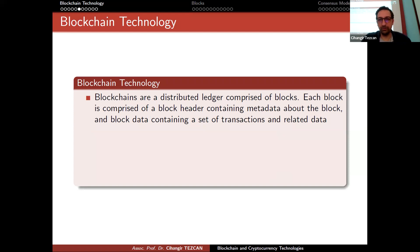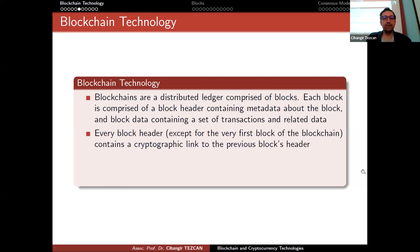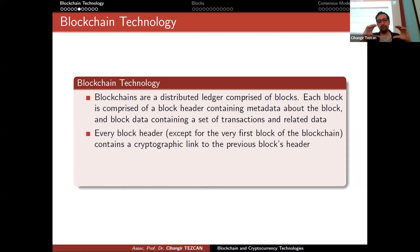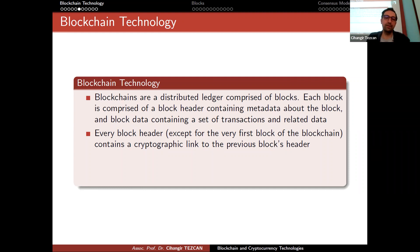Blockchains are distributed ledgers comprised of blocks. Each block is comprised of a block header containing metadata about the block and block data containing a set of transactions and related data. Every block except for the first block — generally called the genesis block — contains a cryptographic link to the previous block's header. By 'cryptographic link' we mean a hash: we hash the block header, not the whole block. Instead of just saying block one, block two, block three, we also keep the hash of the previous block, so we can be sure each block is linked to the previous one — this provides tamper resistance.